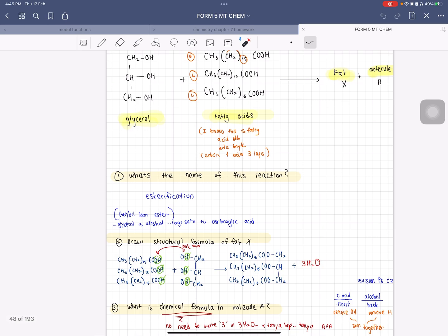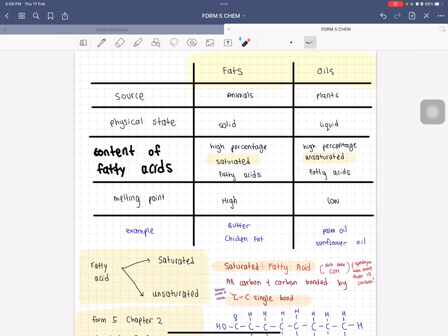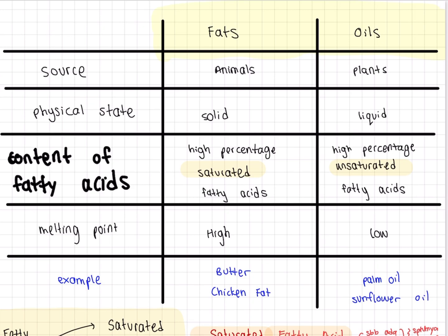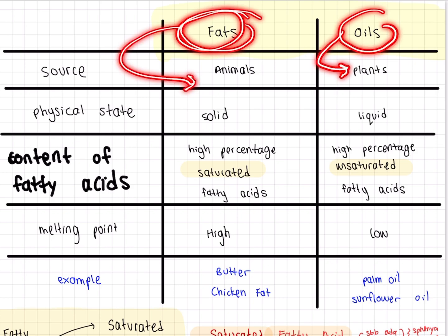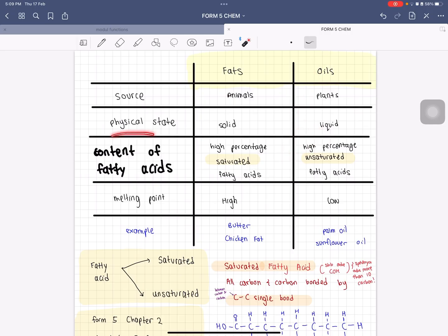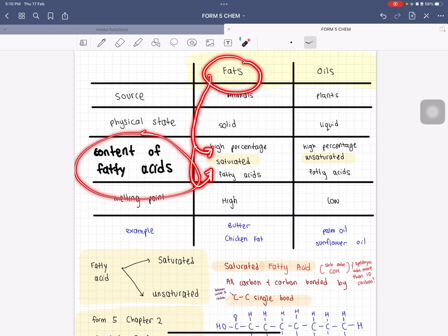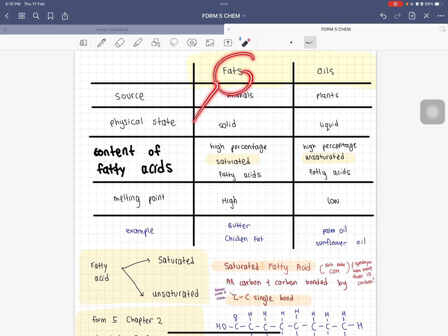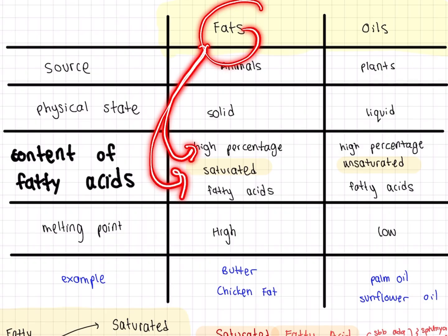Moving on, now we're going to find out the difference between fats and oils. What are the differences? They're both under the homologous series of ester, but now time to differentiate them. Let's look back from the source: fats are from animals, oils are from plants. Fats' physical state is solid, whereas oil's physical state is liquid. Content of fatty acids: it has high percentages and it's saturated. Fats are saturated fats with high percentage, while oils are unsaturated fats.